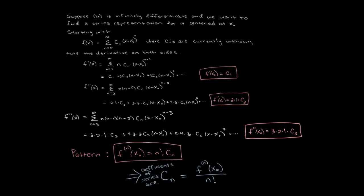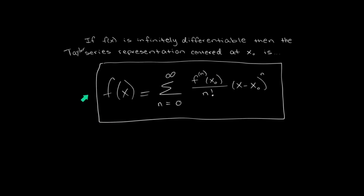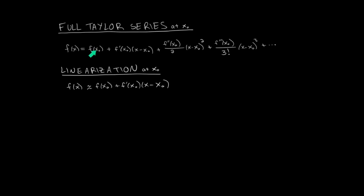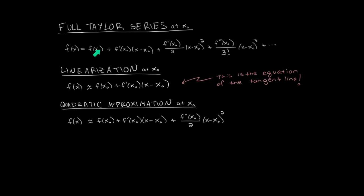Here's a summary of our results. Looking at the individual terms: f of x-naught for the first term, f prime of x-naught times x minus x-naught to the 1st power, f double prime divided by 2 factorial times x minus x-naught cubed, and so on. Notice that the first two terms of the Taylor series — if you remember your calculus 1 — that's the equation of the tangent line, also called the linearization of the function at x-naught. We can also include the first three terms, and that would be called the quadratic approximation.